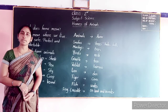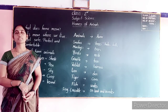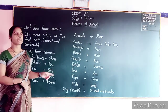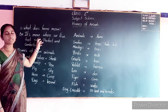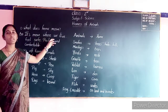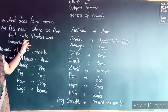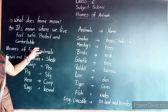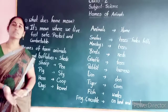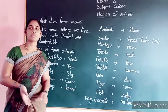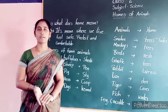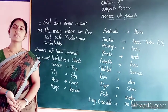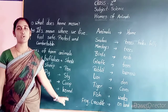What does shelter mean? Shelter means home. What does home mean? It means where we live, feel safe, protected and comfortable. Animals also have different types of houses with different names. Now we are discussing about animals' homes.